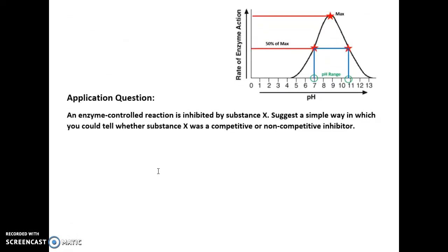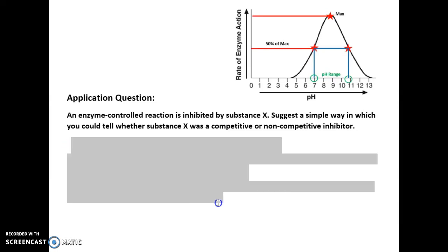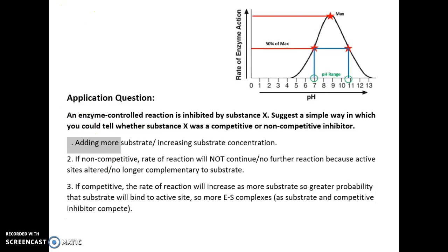An application question on inhibitors: an enzyme-controlled reaction is inhibited by substance X. How would you tell whether substance X is competitive or non-competitive? You would add more substrate, i.e., increase the substrate concentration. If it is a non-competitive inhibitor, the rate of reaction will not increase no matter how much substrate you add, because the active site has been altered by the inhibitor binding to the allosteric site and altering the tertiary structure. If it is a competitive inhibitor, the rate of reaction will increase because there's more probability that the substrate will bind rather than the inhibitor, so the substrate outcompetes the inhibitor for the active site, resulting in more enzyme-substrate complexes and a higher rate of reaction.